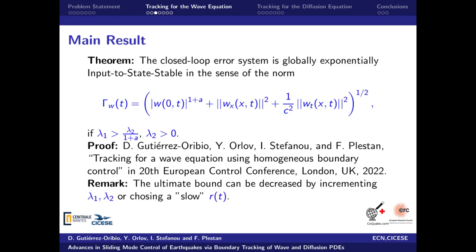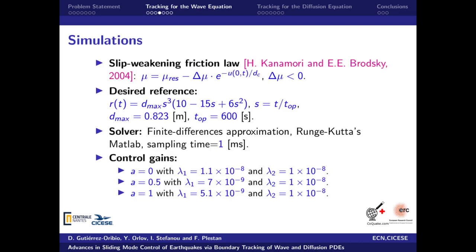We can answer this question by looking at the main result of this section. Assuming the control gains are represented as shown, the closed loop error system is globally ultimately bounded in the sense of this norm. The gain design depends only on the homogeneous parameter A and the ultimate bound can be reduced by incrementing the control gains or by choosing a slow reference. The proof of the theorem and more details can be found in our previous work from the 20th European Control Conference.